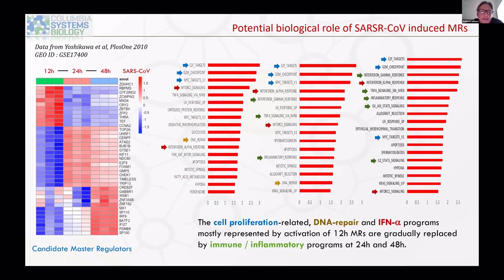At the 12-hour time point, there is a dramatic increase of E2F targets, G2M checkpoint profile, MYC targets, mTORC signaling, and DNA repair, with a small amount of interferon response beginning. As you move to the 24- and 48-hour time points, the interferon inflammatory response becomes dominant. While some cell cycling programs are retained, most highly activated programs include JAK-STAT signaling, inflammatory response, TNF-alpha signaling, interferon alpha response, and interferon gamma response. This shows a time-dependent migration in the programs the cell uses to respond to infection and create an environment productive for viral replication.